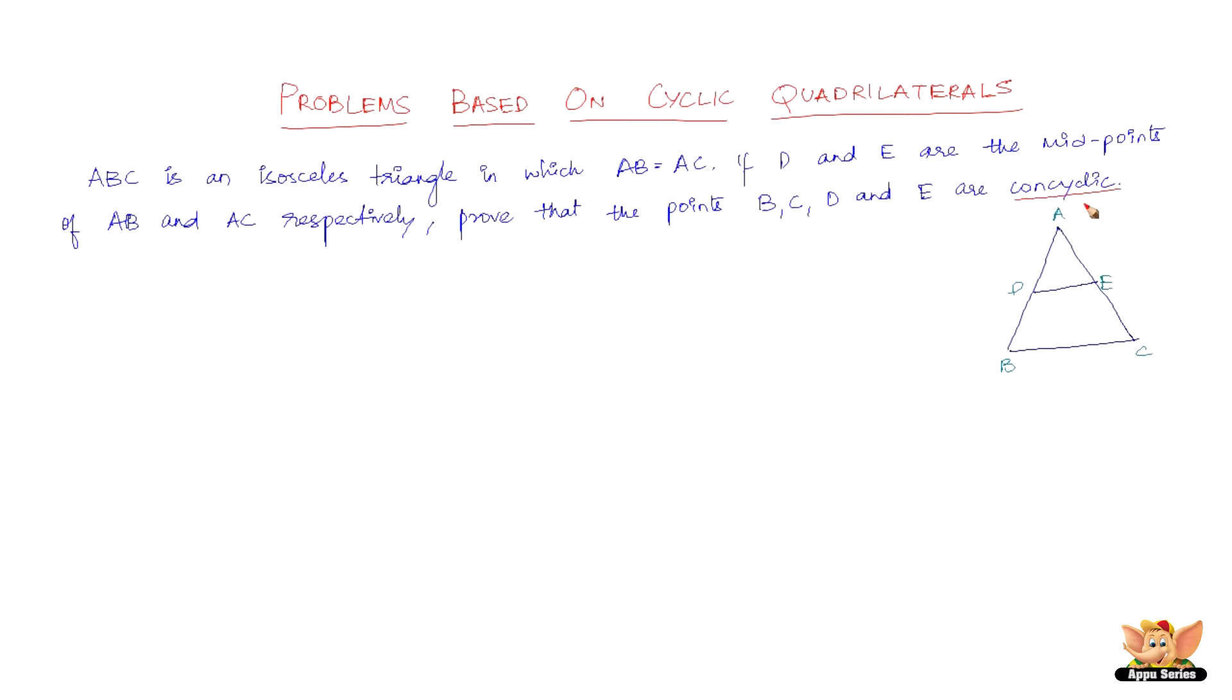Before we go into the problem, let us see what concyclic means. Concyclic means points that lie on the same circle. So the points D, E, B and C lie on a circle.